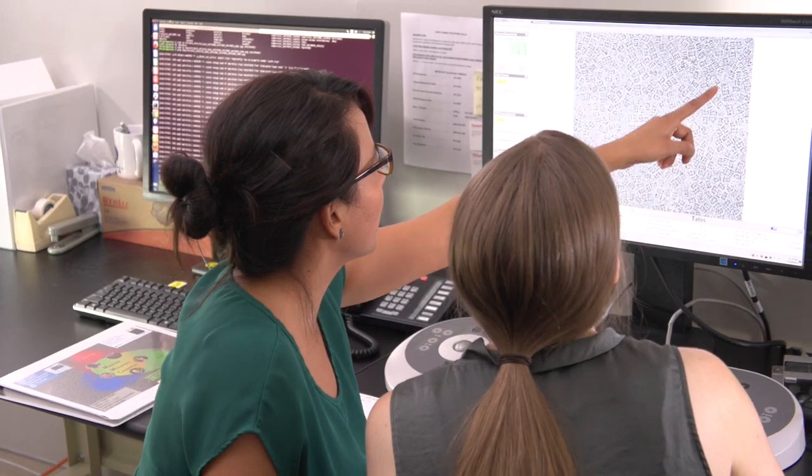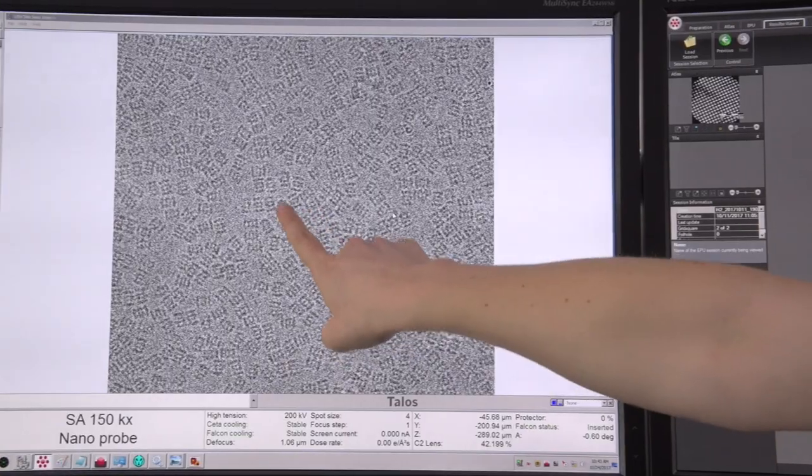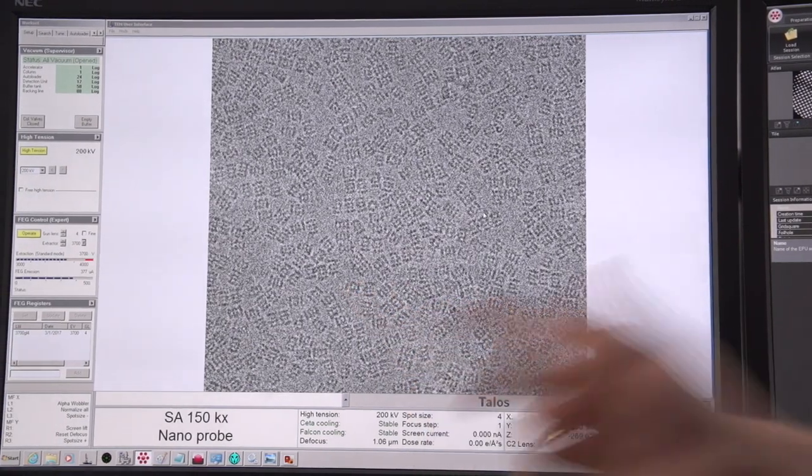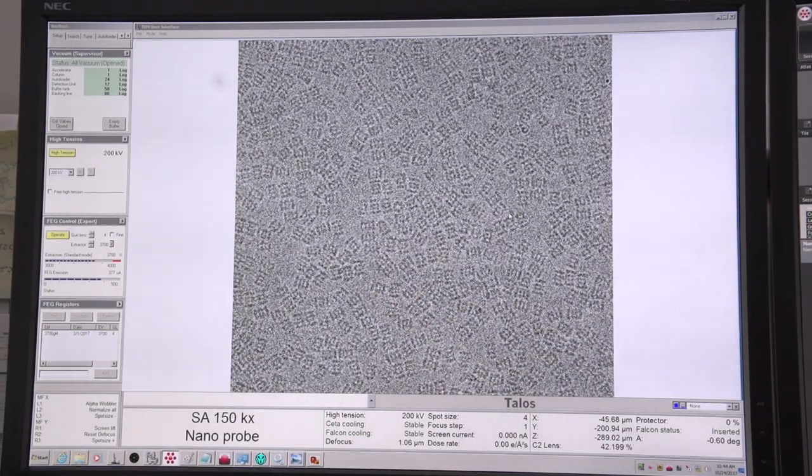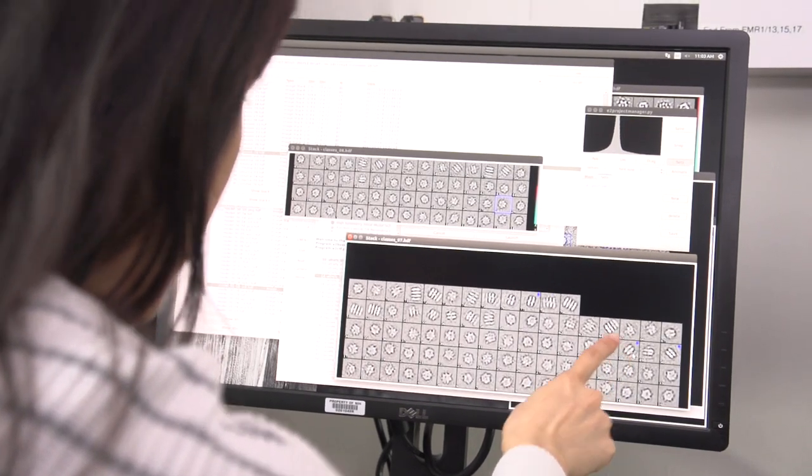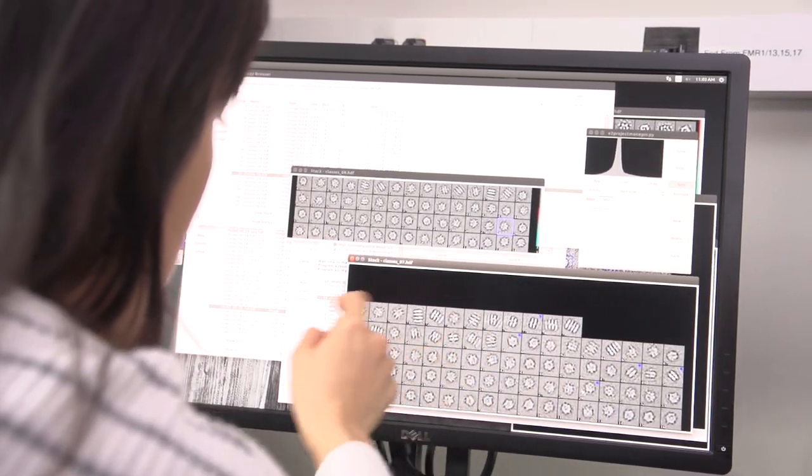This technology allows structural biologists to study large protein complexes. For example, we can visualize proteins at the surface of viruses like HIV or protein switches involved in sensation. This information can be used to design better vaccines and painkillers.